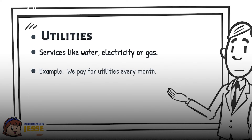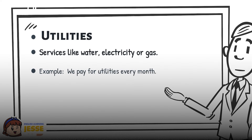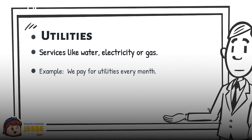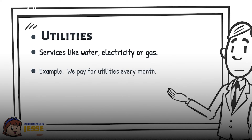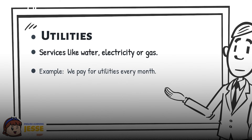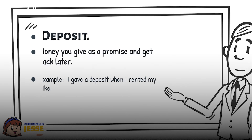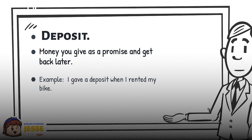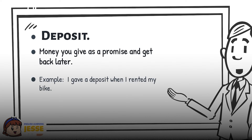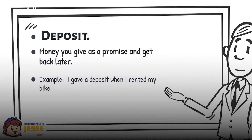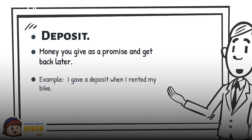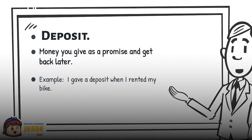Utilities: services like water, electricity, or gas. Example: We pay for utilities every month. Deposit: money you give as a promise and get back later. Example: I gave a deposit when I rented my bike.